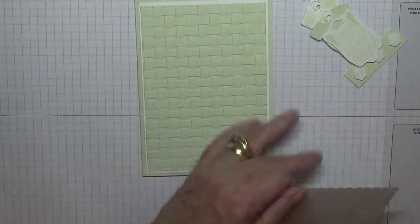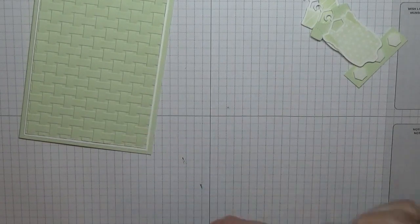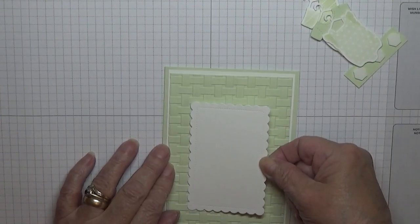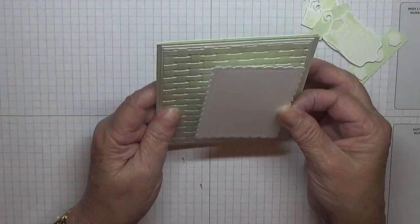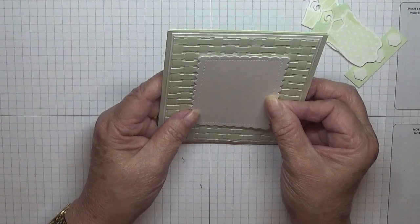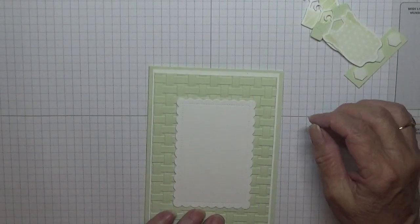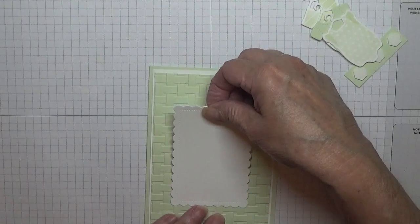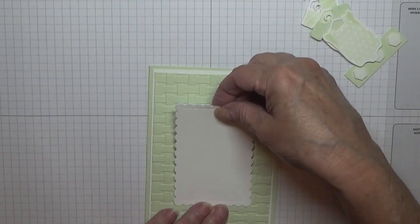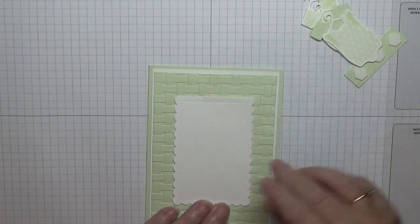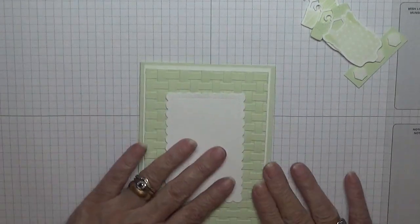Now, I'm going to glue this on before I stick the onesies on. And we're just going to place that right in the middle. Too low. Up a bit. That'll do. That's better. Take all the backings off these dimensionals.